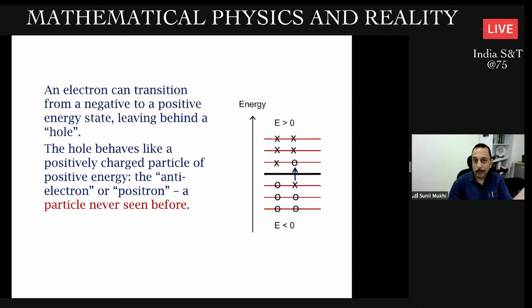This process, which occurs when we give energy to the system, creates a positive energy electron and also creates a positive energy hole. It creates two particles. Energy conservation is not violated - we have to give energy to make this happen. One is a familiar electron, and the other has all properties opposite to the electron: it has opposite electric charge and is called a positron. But it was a particle never seen in 1928 when he wrote this paper.